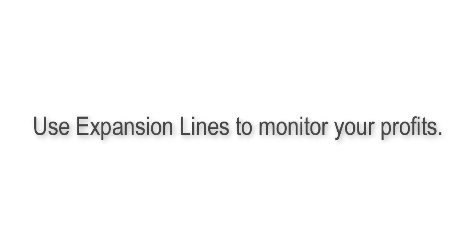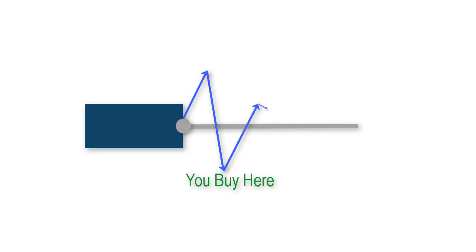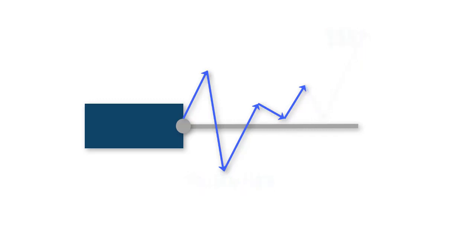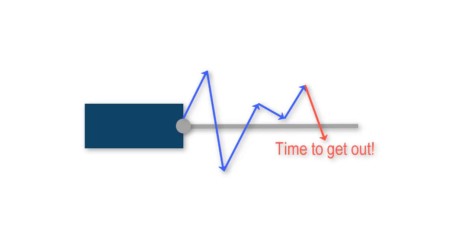You can also use expansion lines to monitor your profits. On a buying opportunity, once price gets over the current expansion line, you'll possibly be in the money. At that point, two things can happen: if current price holds above the last expansion line, there's a good chance it will turn into a run within the existing trend, providing more profits. If price comes back through the expansion line after putting you in the money, the trend might possibly be over — this may be a good time to close at breakeven or with a small profit and reevaluate the market.